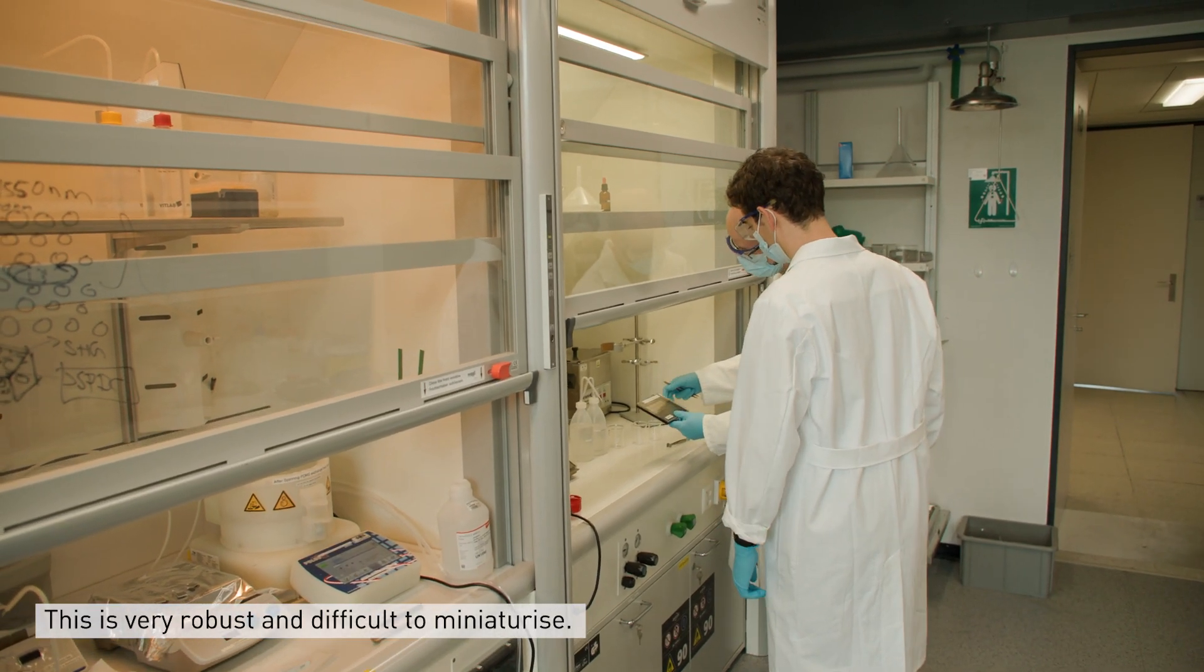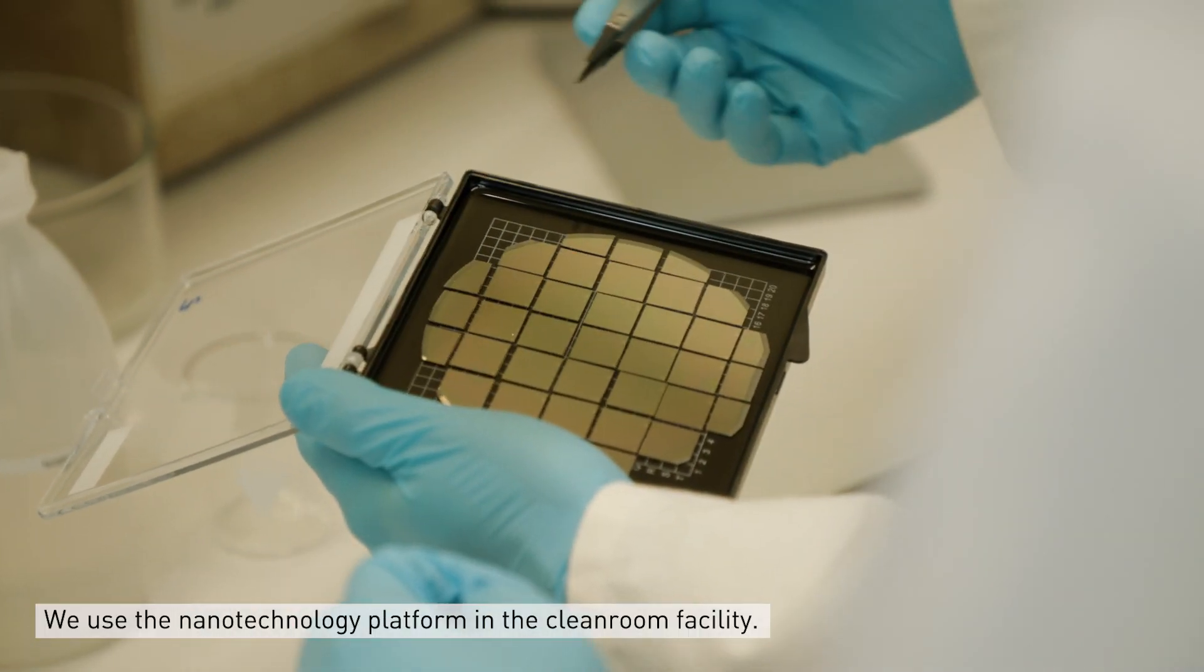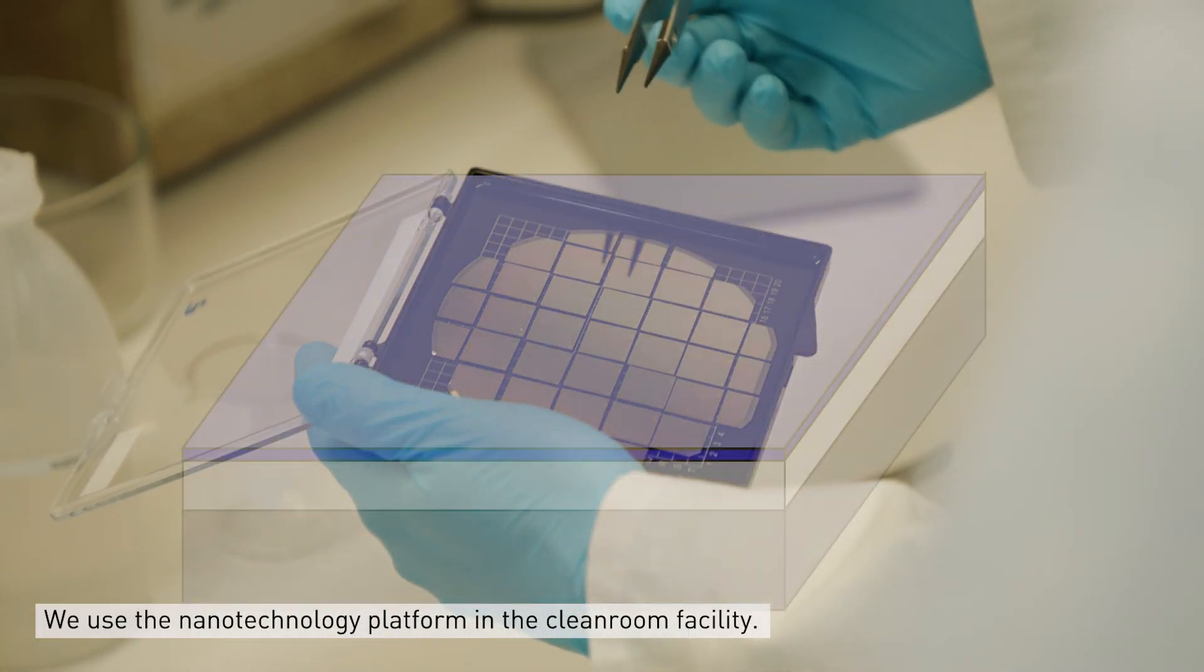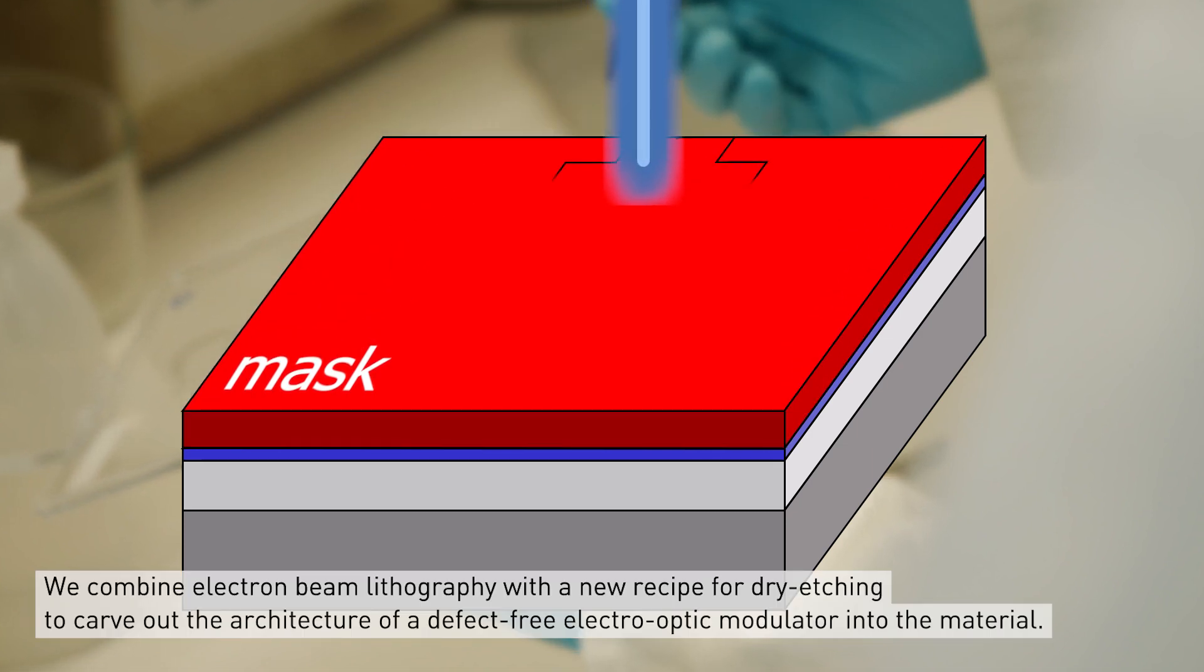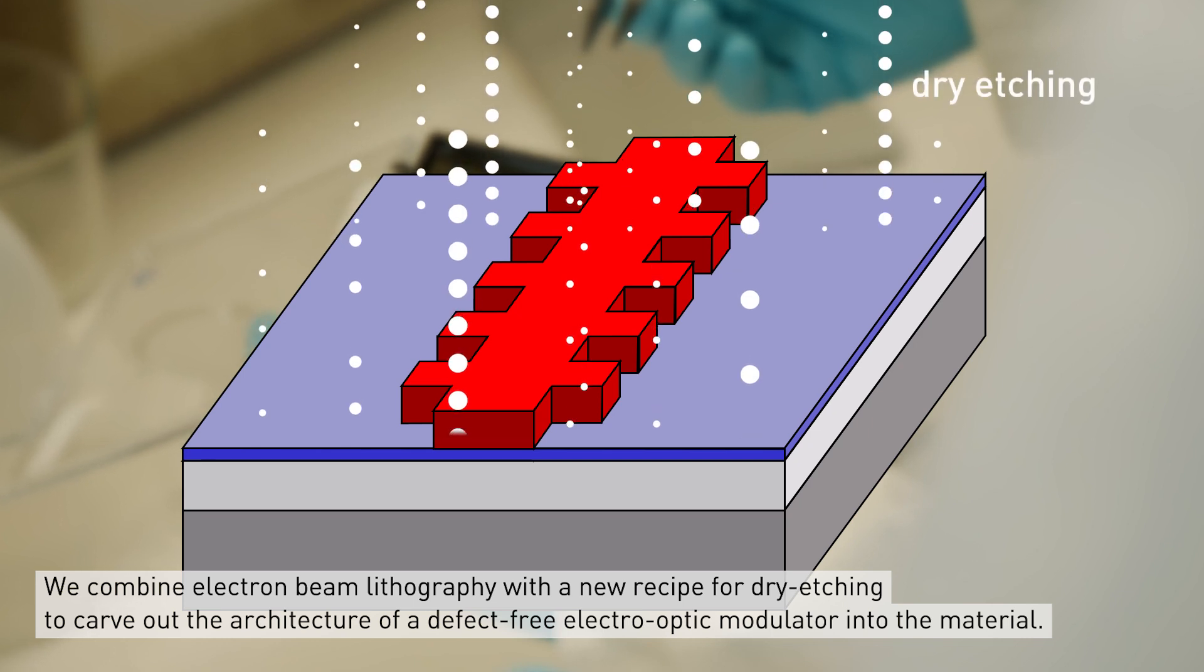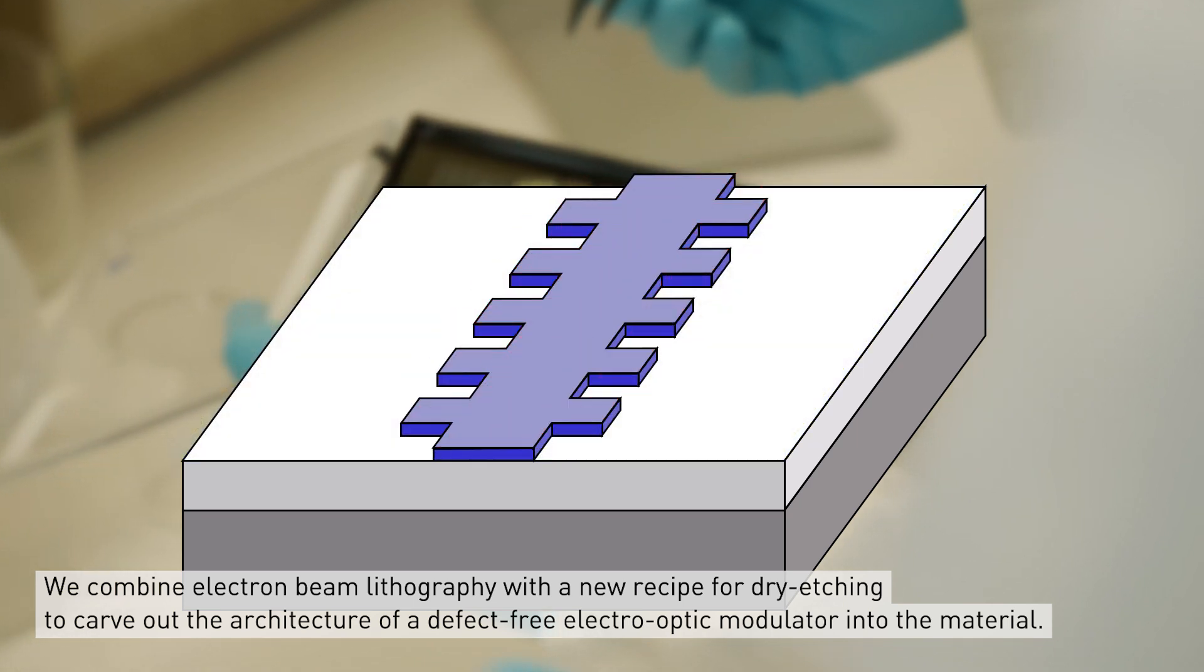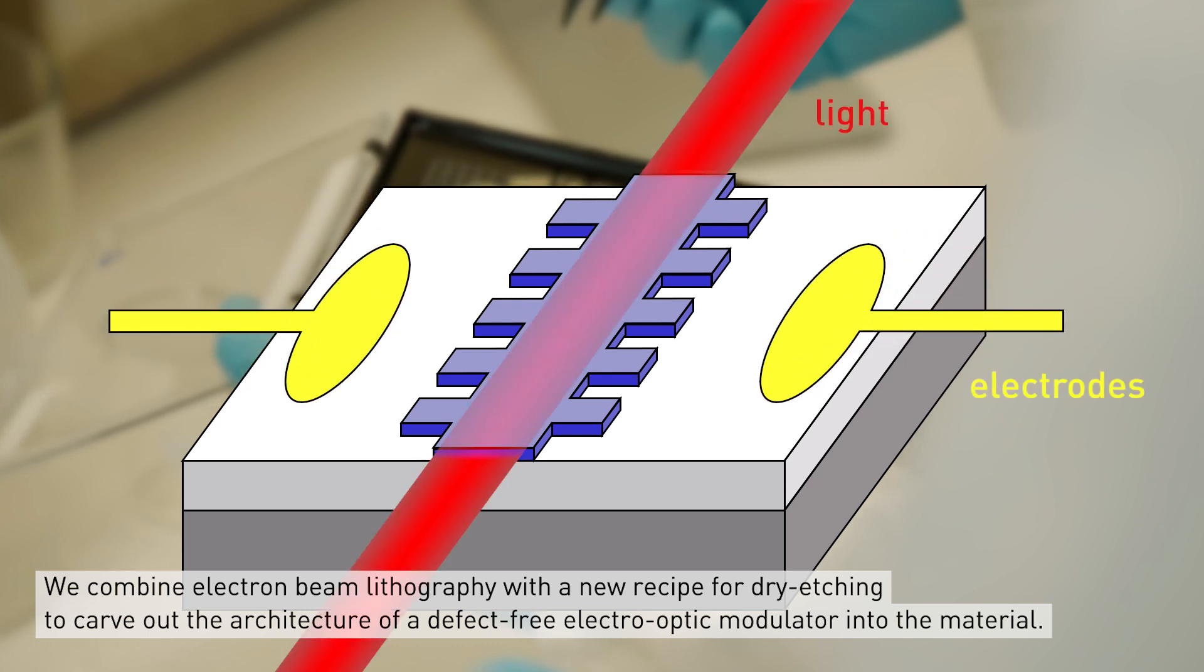We use the nanotechnology platform in the clean room facilities so that we can combine electron beam lithography and develop a recipe for dry etching so that we can carve into the material the architecture of a defect-free electro-optic modulator.